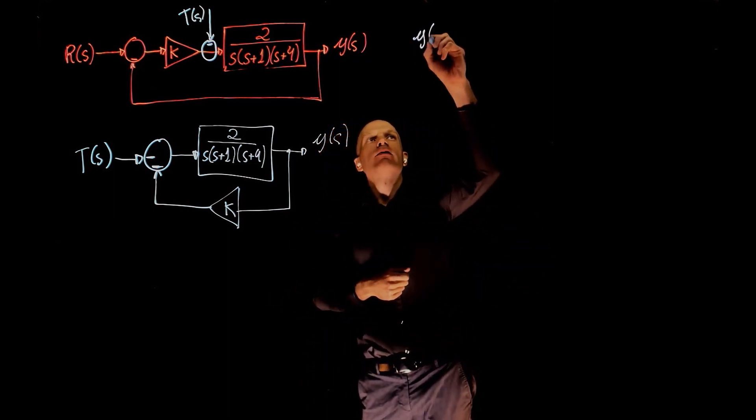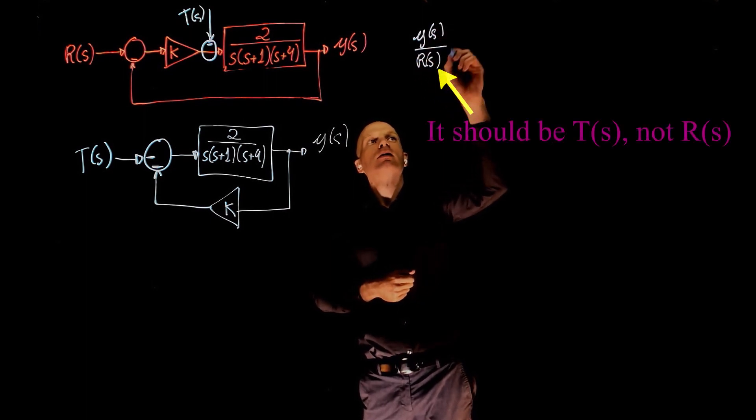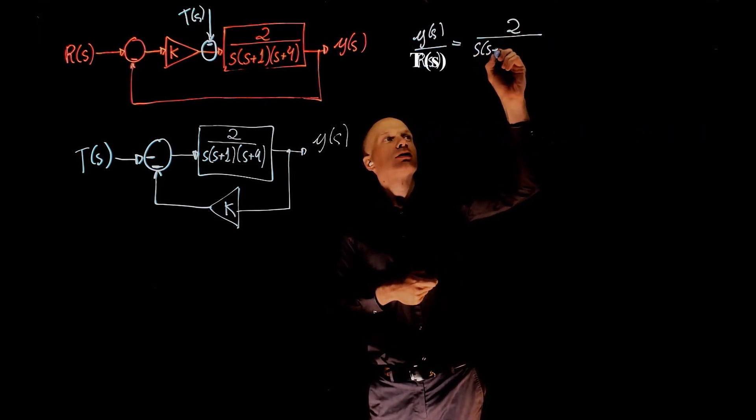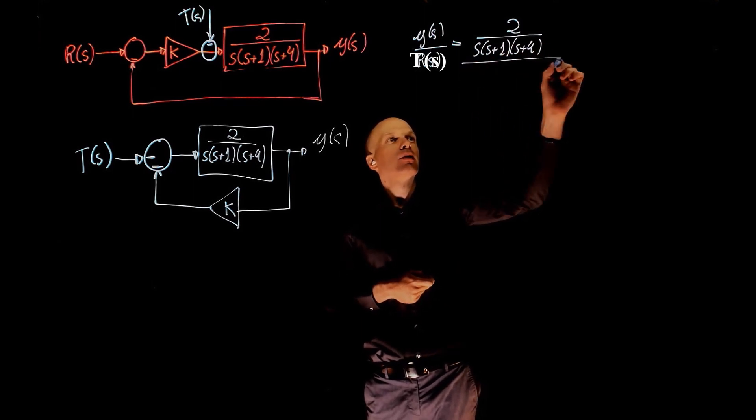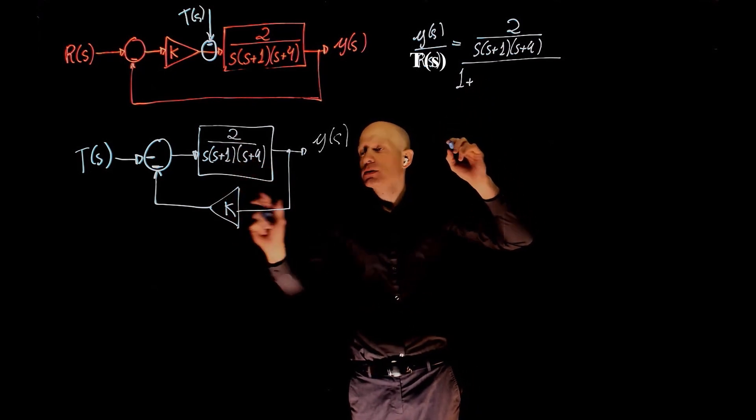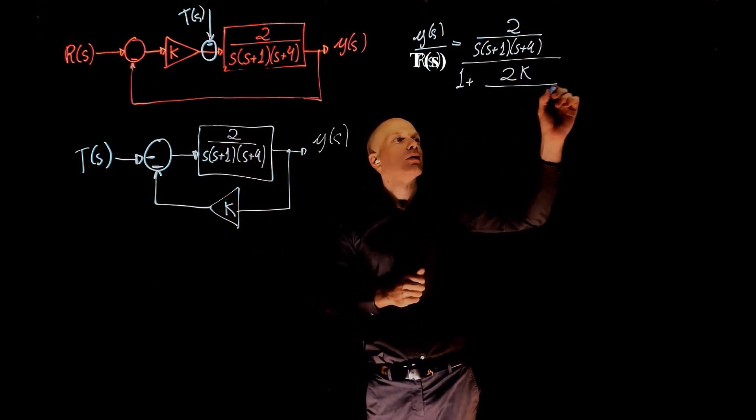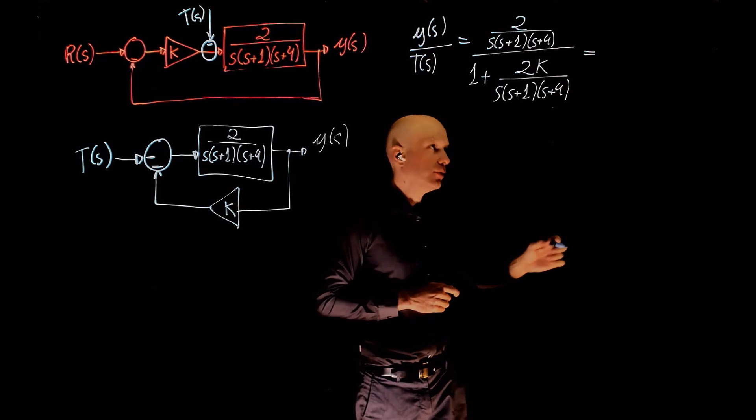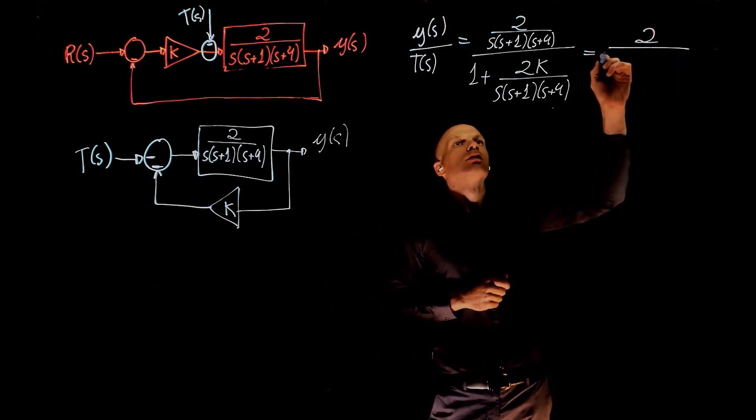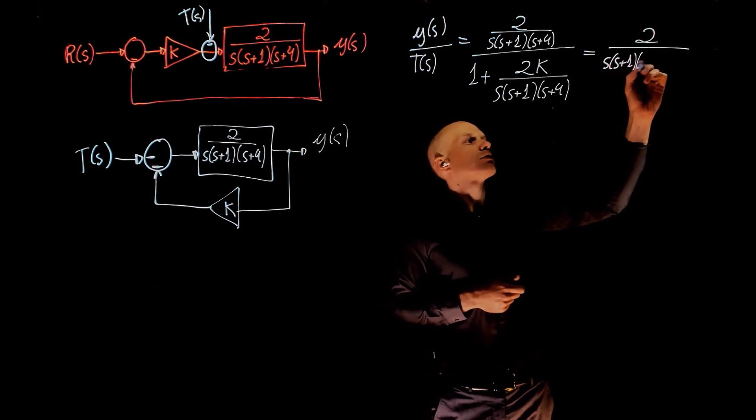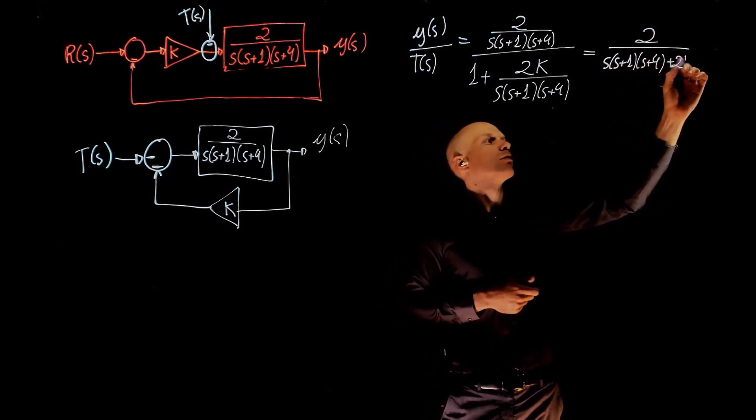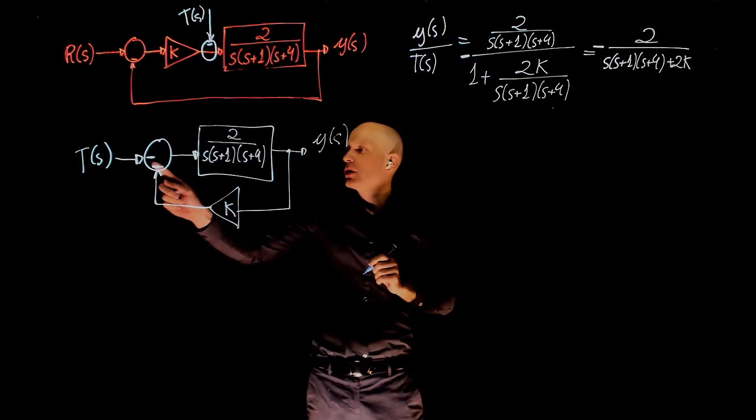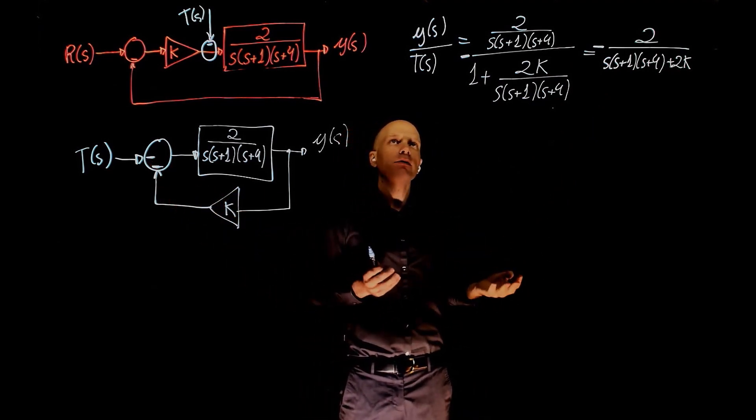Now the transfer function here is easy. Y(s) over R(s) is 2/(S(S+1)(S+4)) divided by 1 plus this times that, 2K/(S(S+1)(S+4)). And this simplifies to 2/(S(S+1)(S+4) + 2K). And of course, these two functions need the negative sign. And I forgot, the negative comes from this sum. Now we can define the error.